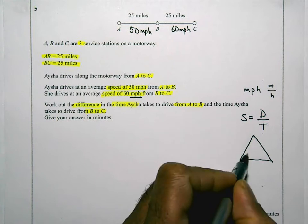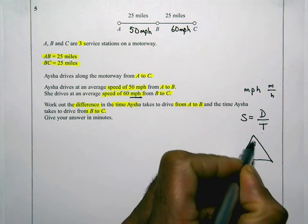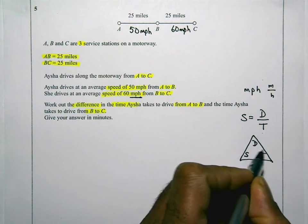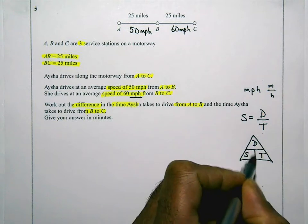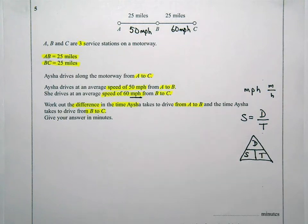Speed is equal to distance over time. They split it up like so. And by covering up any of the letters, you can use the remaining formula to help you work out the thing that you want to find. And in this case, we want to find the time.